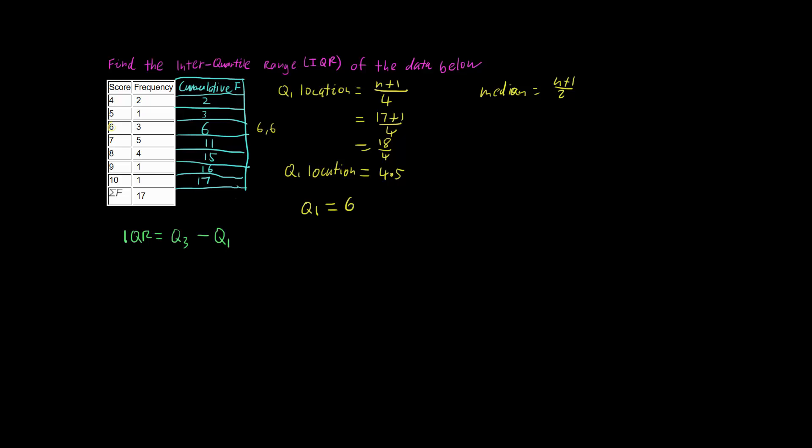And then we want to do a similar thing for finding our Q3. Now the Q3 is located 3 quarters of the way in, so our Q3 location is going to be 3 quarters of our total. So we're going to have n plus 1 over 4, but we want 3 quarters, so we want to times it by 3. So we have 3 quarters of how many there are.